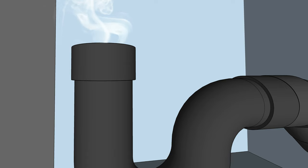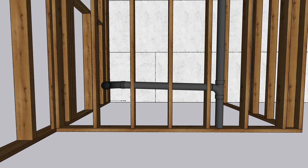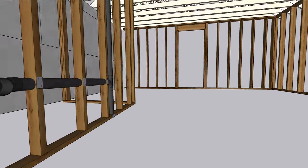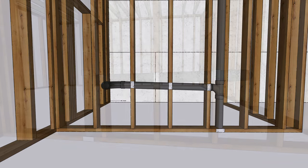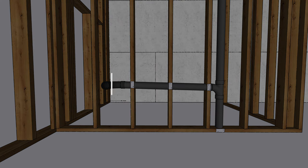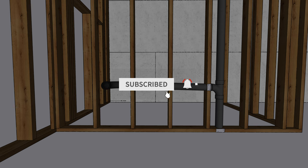To wrap up, install protection plates so that you don't damage the pipe while installing drywall or cabinets. That's all for today's video. Make sure to like this video and subscribe to our channel. See you next time.